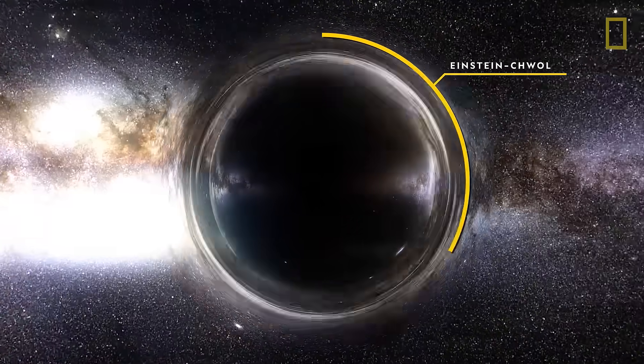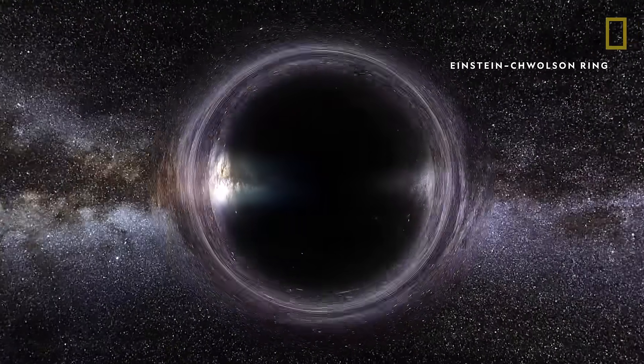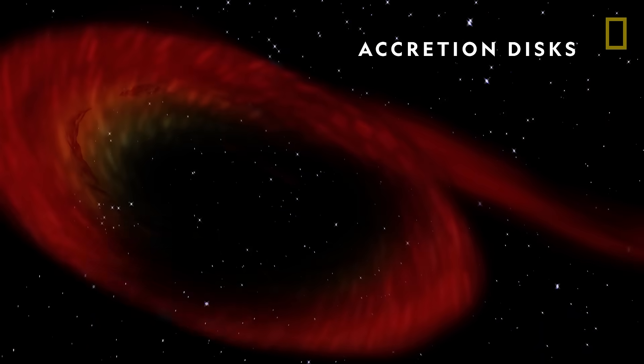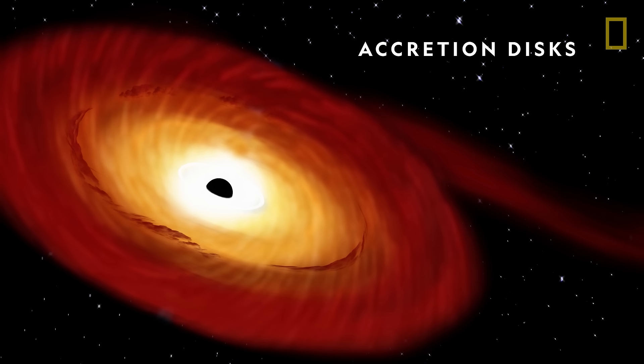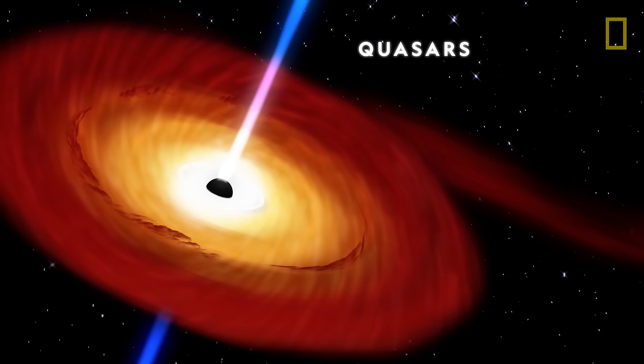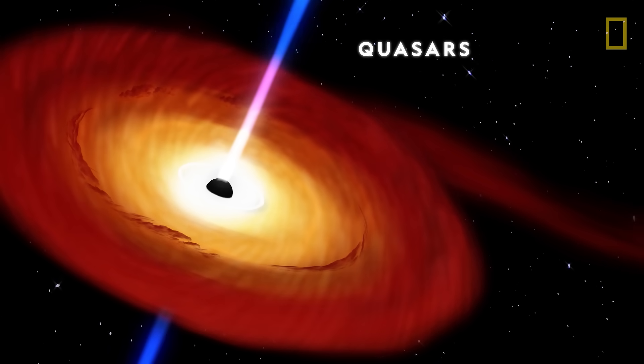Because black holes are invisible, the only way for scientists to detect and study them is to observe their effect on nearby matter. This includes accretion disks, a disk of particles that form when gases and dust fall toward a black hole, and quasars, jets of particles that blast out of supermassive black holes.